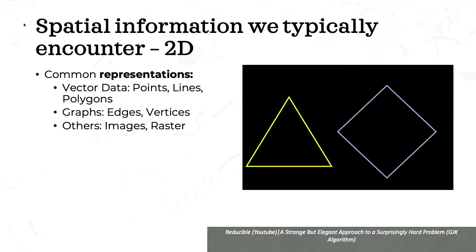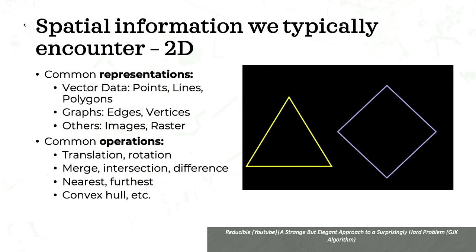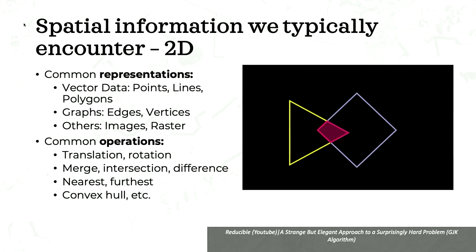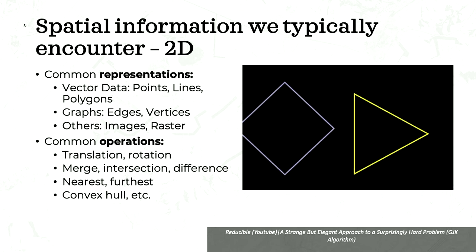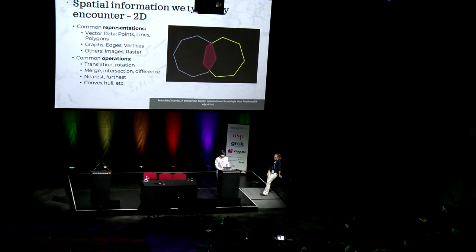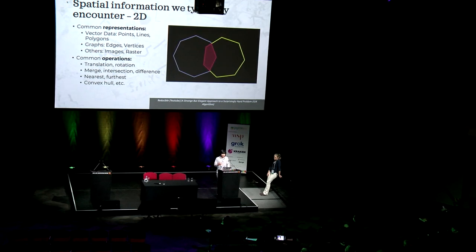The simplest vector data you can think of is just a triangle and a square. But you can do more interesting things when you start moving them around, rotating them, finding the intersection between them — highlighted in purple — merging them, or using one shape to mask another. These are common operations when dealing with vector data. You can think of these representations as not unique to geospatial data alone, because they are also used heavily in computer graphics, and there is a lot of literature and algorithms developed over the years that we can leverage for geospatial analysis.